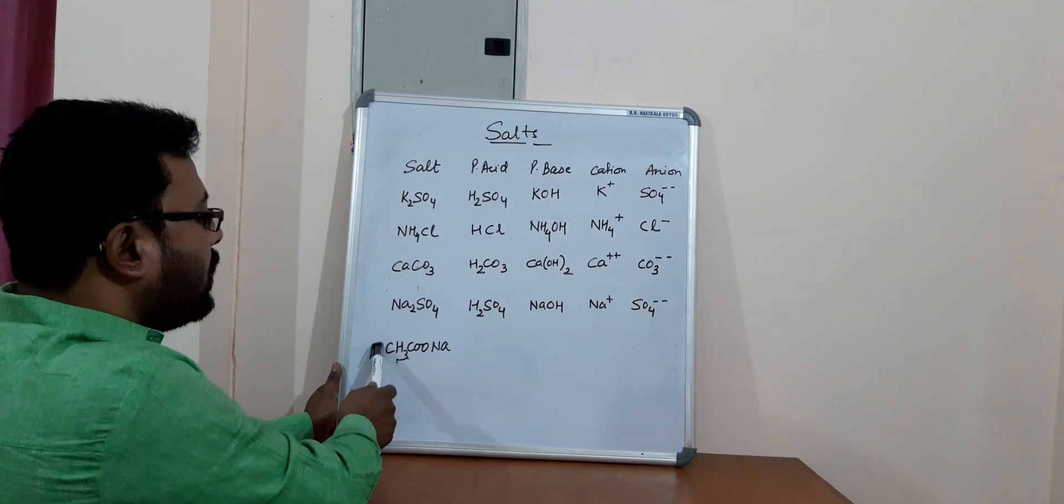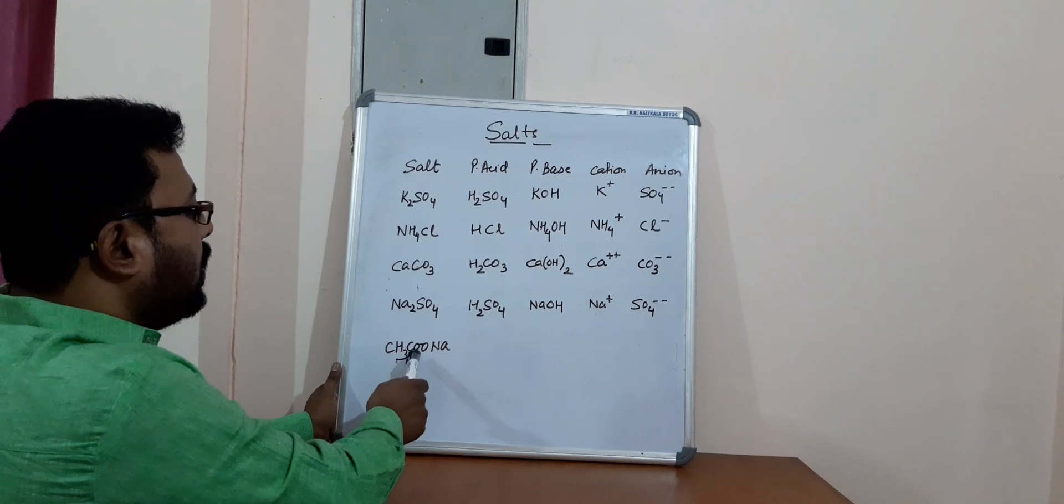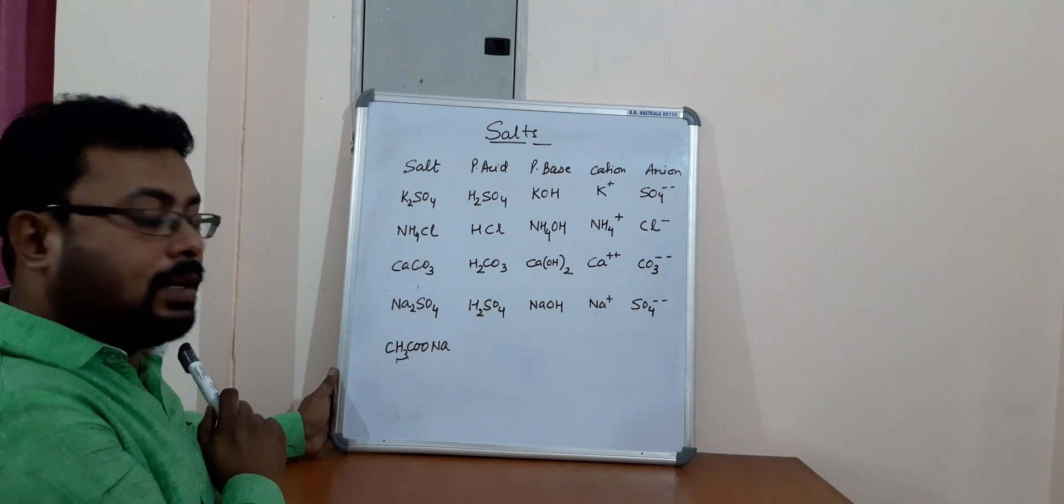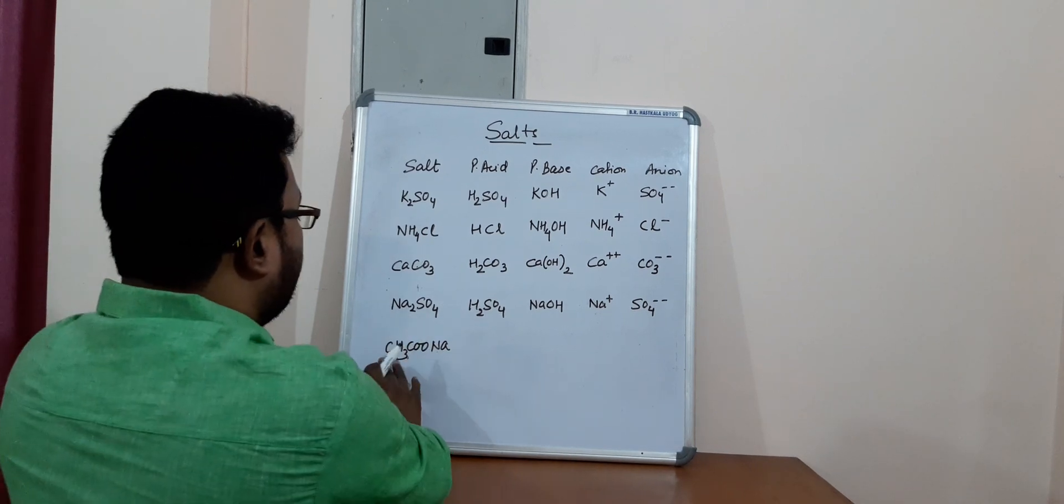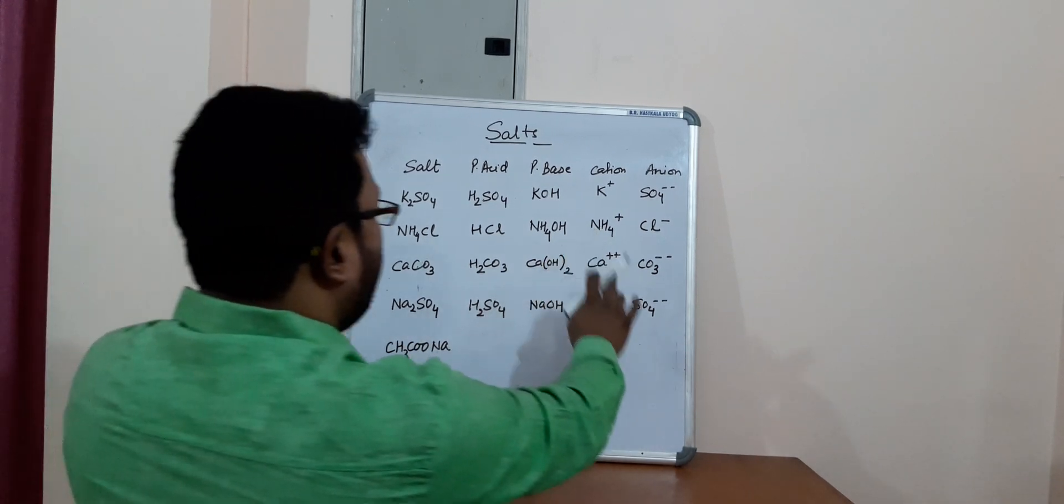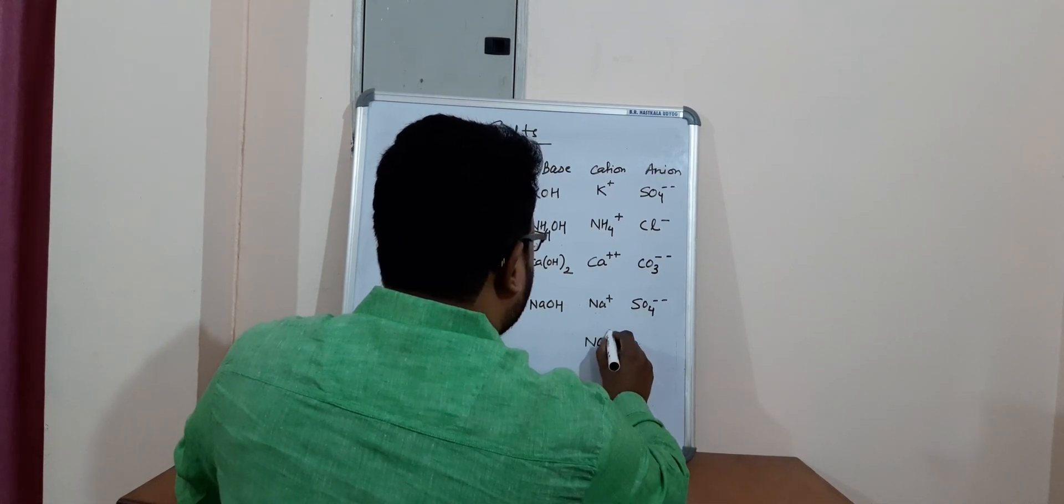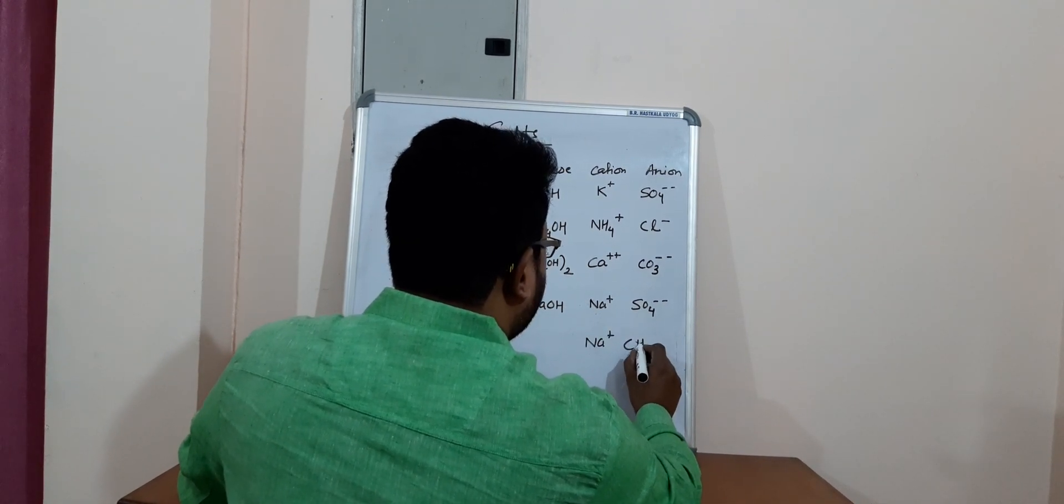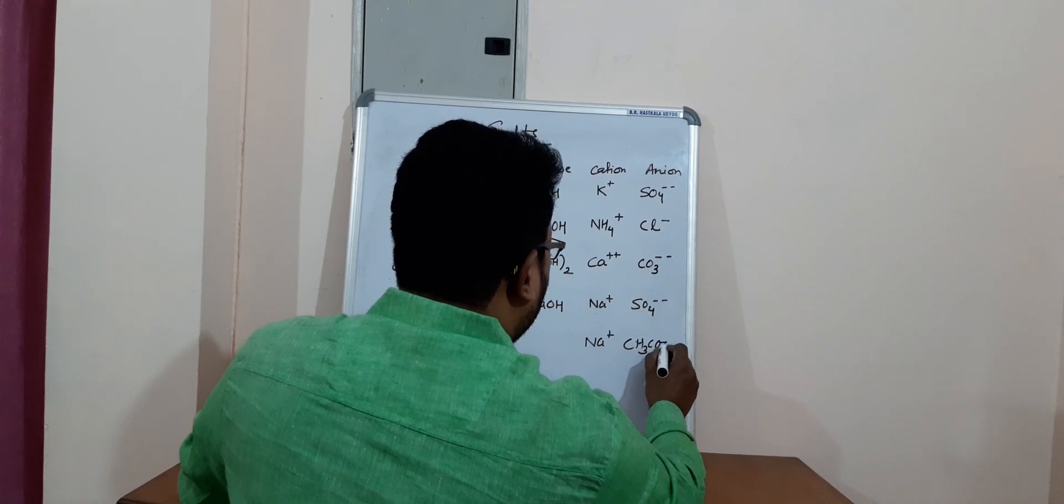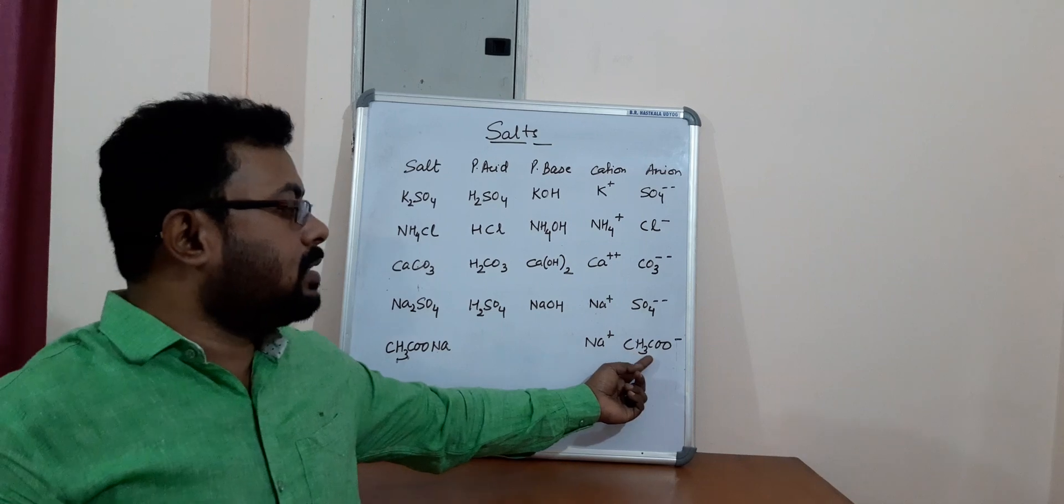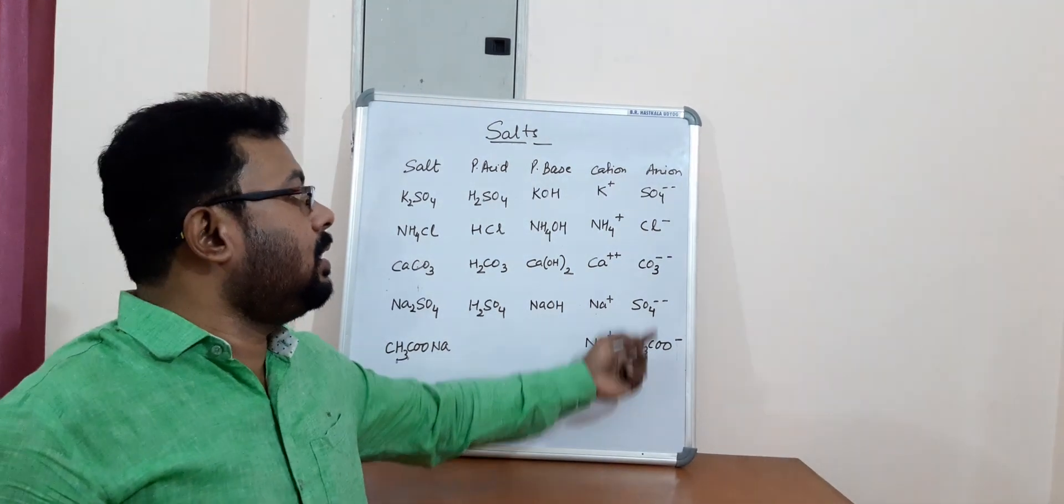Now in organic compounds, the anion is always written before a cation. Now see over here. So what has happened here, the anion is acetate and cation is sodium. So cation is sodium, anion is CH3COO. We call it as ethanoate or acetate. So this is the anion.